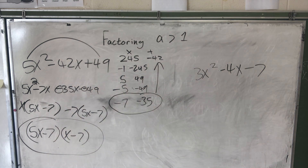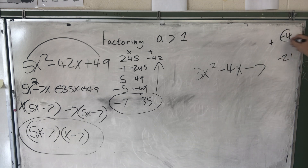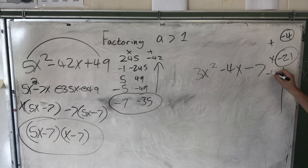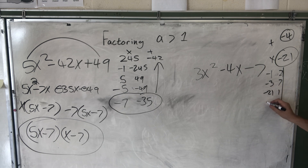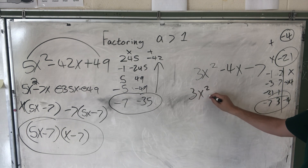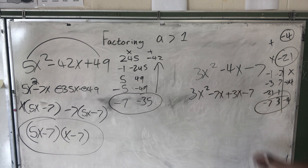Now: 3x² minus 4x minus 7. Step 1: 3 times negative 7 is negative 21. What two numbers multiply to negative 21 but add to negative 4? Let's list pairs: negative 1 and negative 21, negative 3 and 7, negative 21 and 1, negative 7 and 3. Which adds to negative 4? Negative 7 plus 3 is negative 4. So we split: 3x² minus 7x plus 3x minus 7.